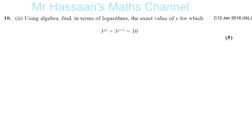Okay, so for part 2 here, we're given an exponential equation. You've got 3 to the power of 2y and 3 to the power of y plus 1. Exponential equation means the variable, the unknown, is in the exponent, in the power, in the index. That's what it means.